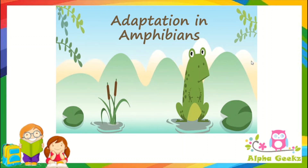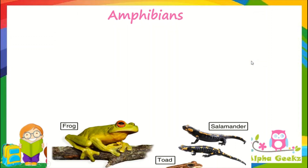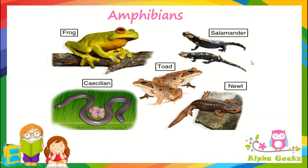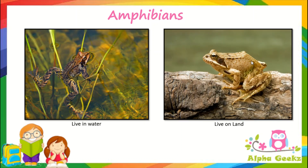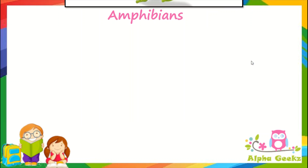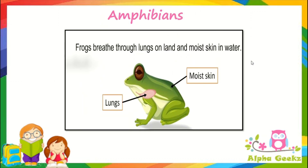Adaptation in amphibians. Amphibians are a class of animals. The word amphibian means two lives — one in water and one on land. They live the first part of their lives in water and the later part on land. Let's see how amphibians have adapted to live both on land and in water.